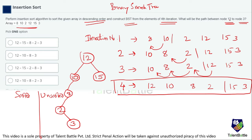The question asks for the path from node 12 to node 3. Starting at root 12, we go to 10, then 8, then 2, then 3. The path is 12 → 10 → 8 → 2 → 3. Comparing with the available options, the fourth option satisfies this path. That is the correct answer.